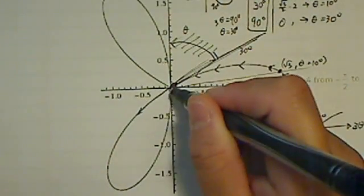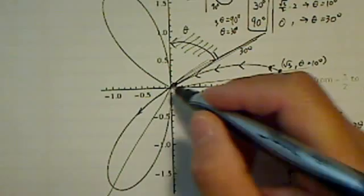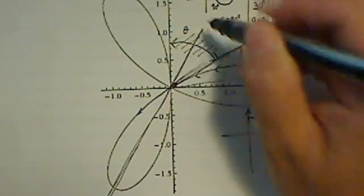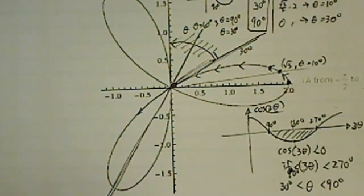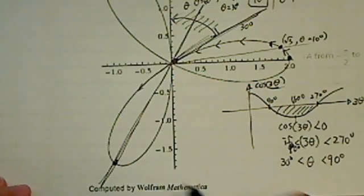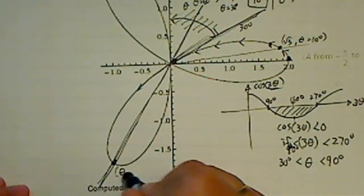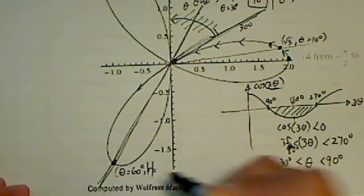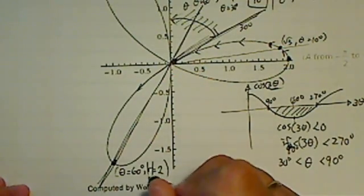Okay, so for example, when theta equal to 60 degrees, oh, my angle is off a little bit, bear with me here. Theta equal to 60 degrees, 3 theta is 180, and cosine of 180 is minus 1. So therefore, there's this little dot over here. When theta is equal to 60 degrees, r is, the absolute value of r is actually equal to 2. So technically, r is equal to minus 2.